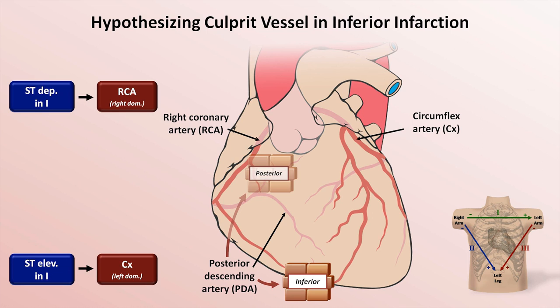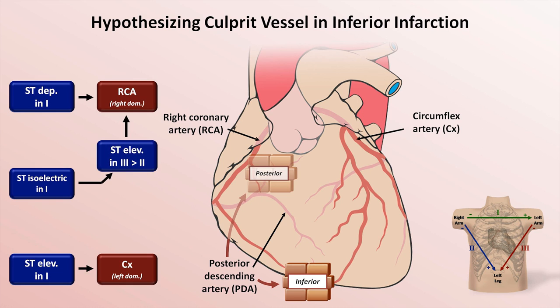The tricky one to remember is if the ST segment in lead 1 is isoelectric, which is the most common scenario. In this case, it depends on how the ST elevation in lead 2 compares to that in lead 3. You can see that lead 3 is angled more to the right, so it makes sense that if the ST elevation in 3 is greater than 2, the RCA is more likely to be the culprit vessel. Whereas if the ST elevation in 2 is greater than or equal to 3, the obstruction is more likely in the circumflex.